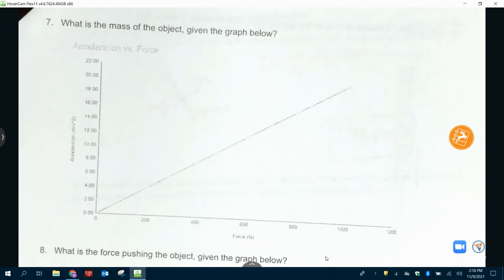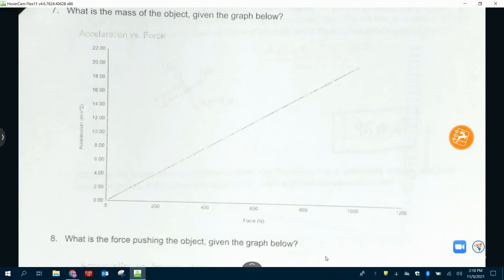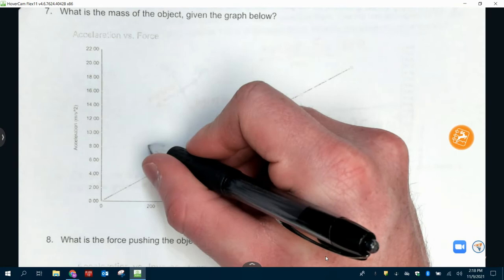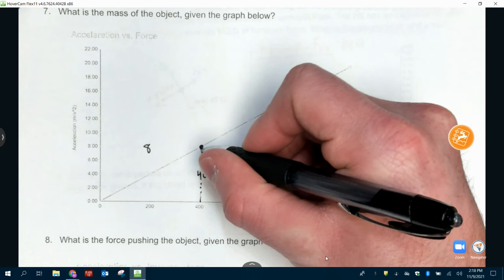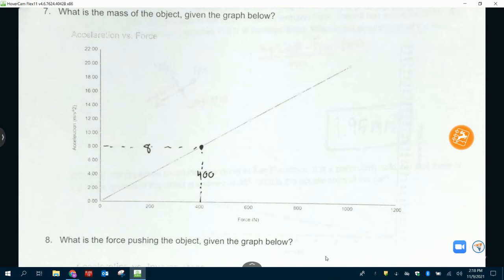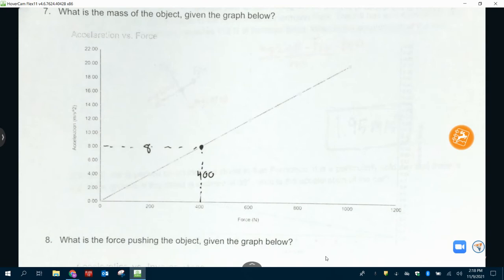This is a review of what we did in the lab and what we did the day or two before the lab going over graphing. The problem is our printers suck. So, I realize it didn't print the best. If you look at this point right here, use this for your slope, it is at 8 and 400. So, on both types of graphs, we care about slope. This one is asking, what is the mass of the object given the graph below?